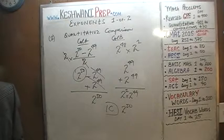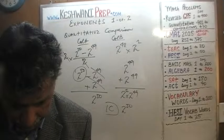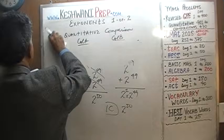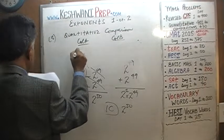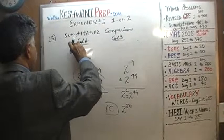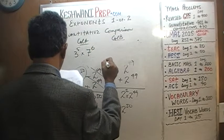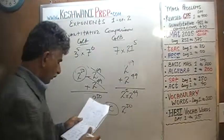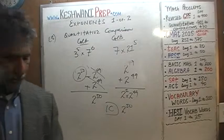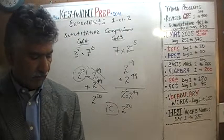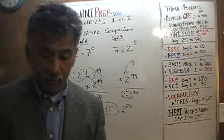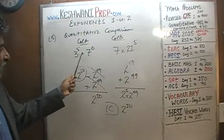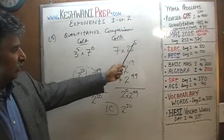Let's do number 3. These are all quantitative comparison questions — we'll do 6 of them today, and starting from number 7 we'll do multiple choice questions in a separate video. Question 3: 3 raised to 5 times 7 raised to 6 versus 7 times 21 raised to 5. Do it yourself.